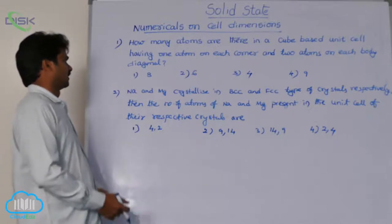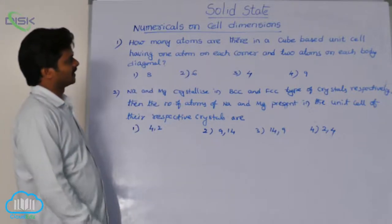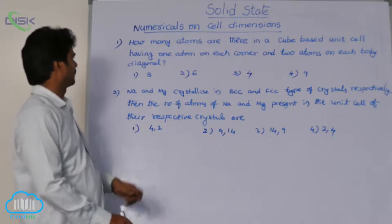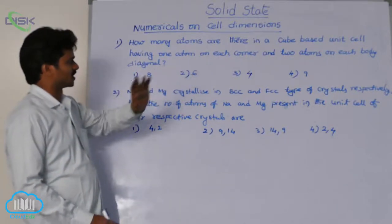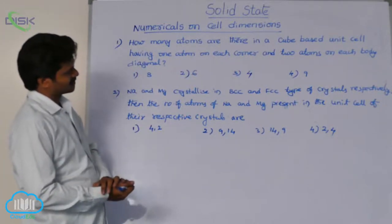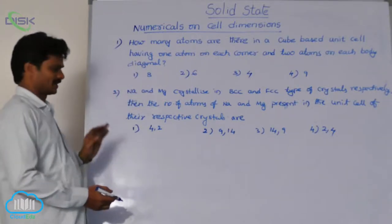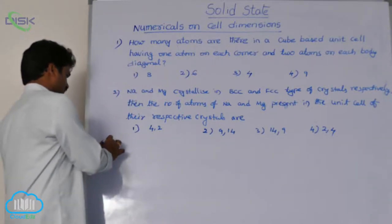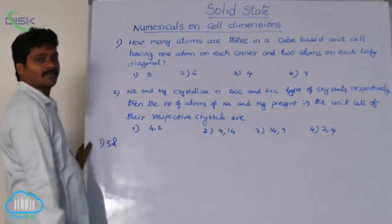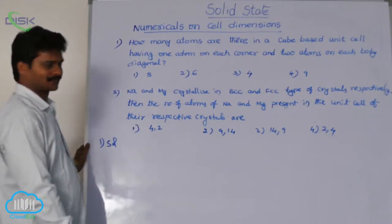In the first question: how many atoms are there in a cube-based unit cell having one atom on each corner and two atoms on each body diagonal? See the solution for the first question. So here, a cube-based system is given.